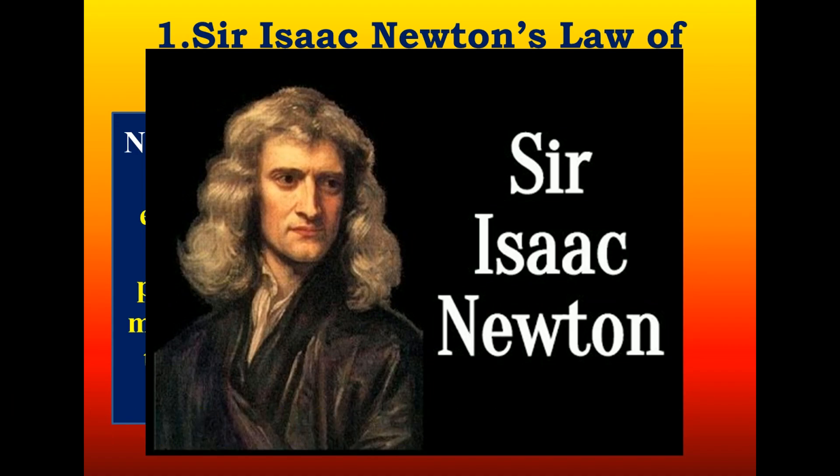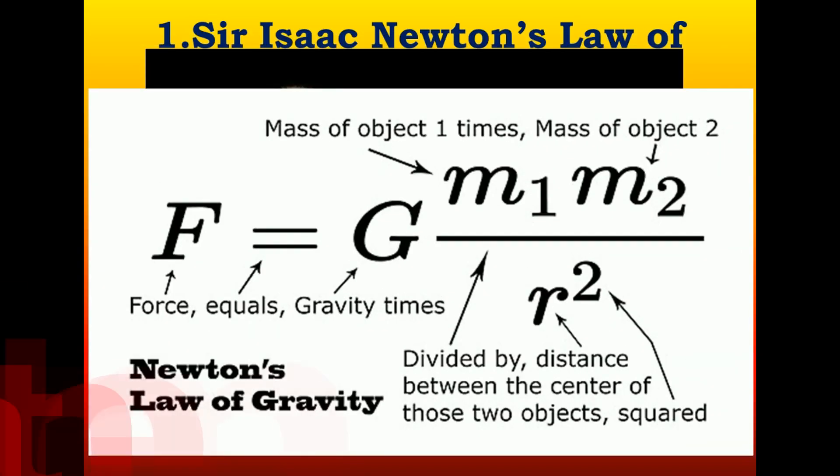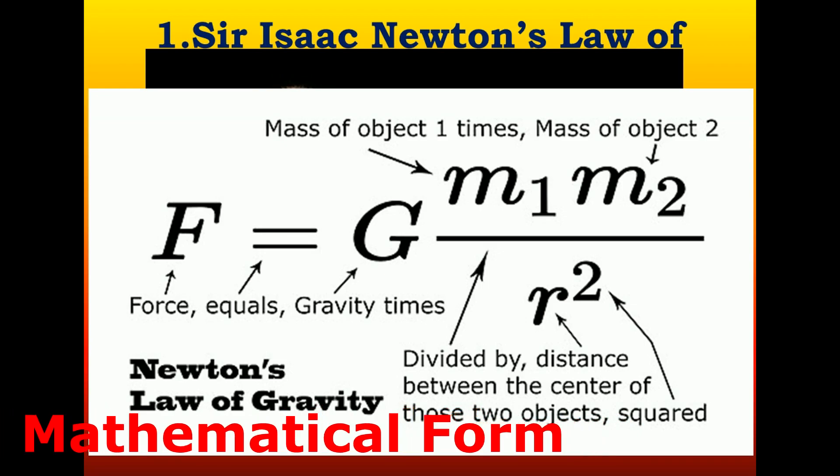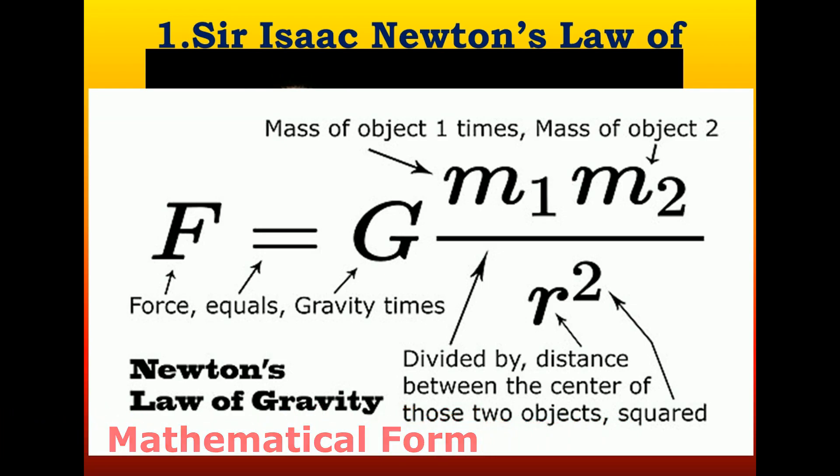The mathematical form looks like this: F equals G times m1 m2 divided by r squared, where F is the force between two masses m1 and m2, and r squared is the square of the distance between the center of those two objects. So this is Newton's law of gravity.